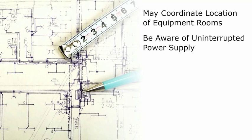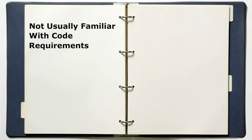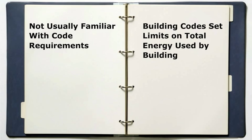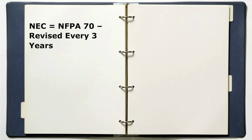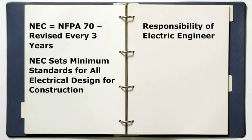The interior designer does not usually need to be familiar with electrical code requirements, but there are several areas that may affect interior design work. Building codes set limits on the total amount of energy used by the building, including equipment and lighting. The NEC, also known as NFPA 70, is revised every three years and sets the minimum standards for all electrical design for construction. Interior designers rarely use the NEC because it is the responsibility of the electrical engineer to design the electrical system.